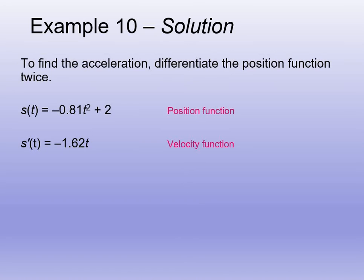So we should be able to take the first derivative here. We take 2 times 0.81, so that gives us 1.62, it's negative. And the derivative of 2 is 0, so that's the velocity of the function. And then s double prime, we're taking the derivative of velocity, so the derivative of negative 1.62t is just negative 1.62.